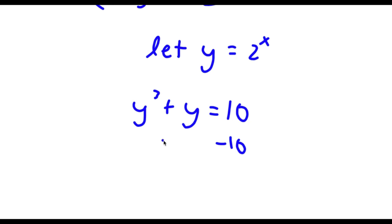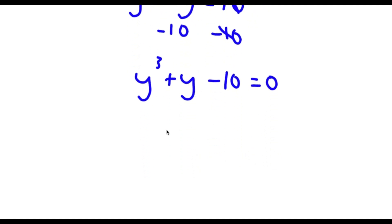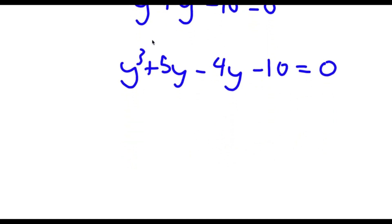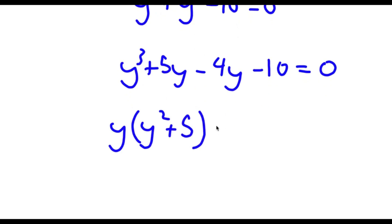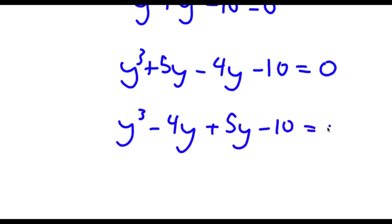Now if I subtract 10 on both sides I get y to the power of 3 plus y minus 10 is equal to 0. Now I'm going to replace y with 5y minus 4y, giving y to the power of 3 plus 5y minus 4y minus 10 is equal to 0. So now it's going to be much easier to factor this out. If I factor out y from y to the power of 3 plus 5y I get y times y squared plus 5.